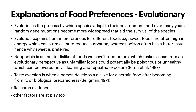Starting off with explanations of food preferences — the evolutionary side of things. Evolution is the process by which species adapt to their environment, and over many years, random gene mutations become more widespread that aid the survival of the species. Evolution explains human preferences for different foods. For example, sweet foods are often high in energy, which can store as fat to reduce starvation, whereas poison often has a bitter taste, hence why sweet food is preferred. There's also neophobia, which is an innate dislike of foods we haven't tried before, which makes sense from an evolutionary perspective, as unfamiliar foods could potentially be poisonous or unhealthy. This can be overcome by learning or repeated exposure.